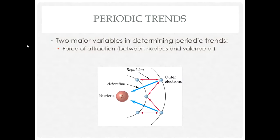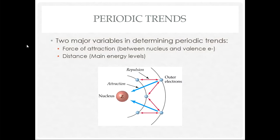There is also the attraction between the inner electrons and the nucleus, and repulsion between electrons, which plays into the properties we discuss. The second variable is distance. As you go down the periodic table from period one to period seven, you're adding more energy levels — period one has one main energy level, period six has six main energy levels around the nucleus.